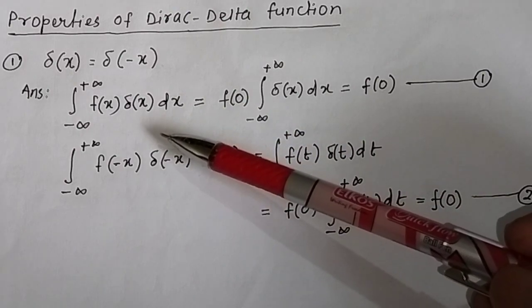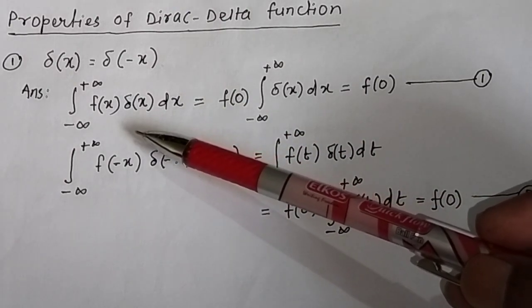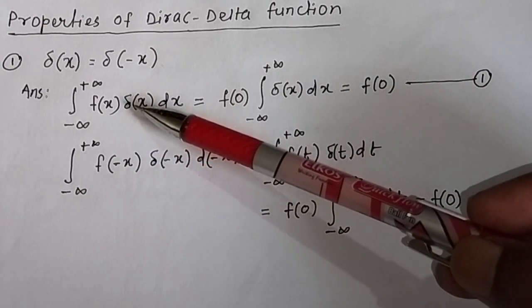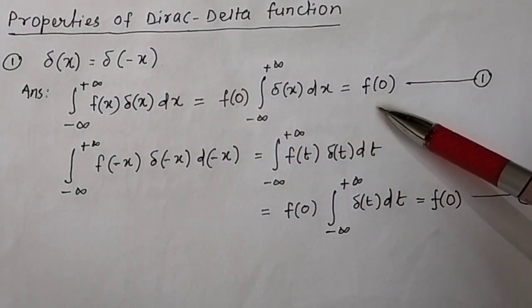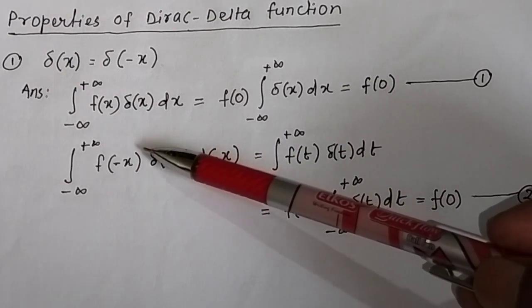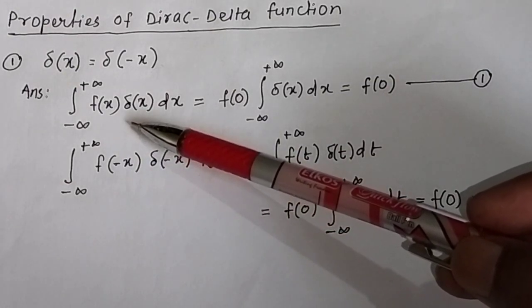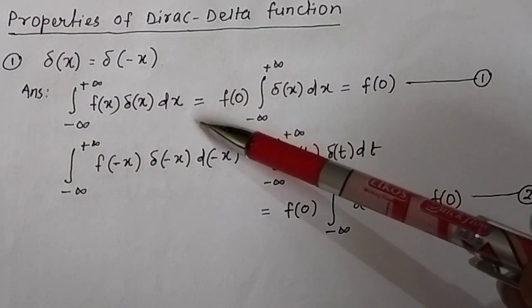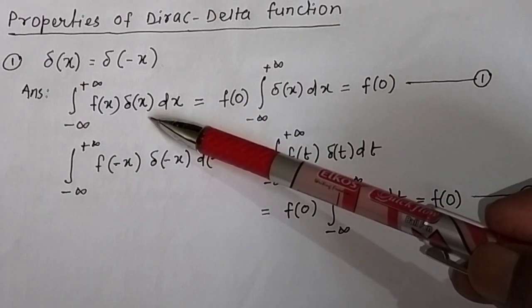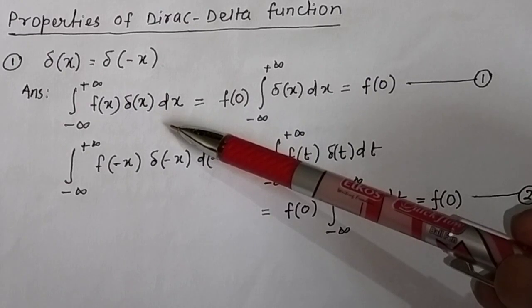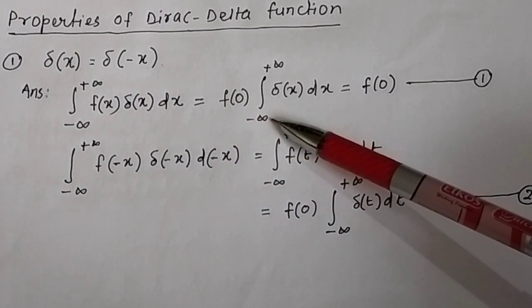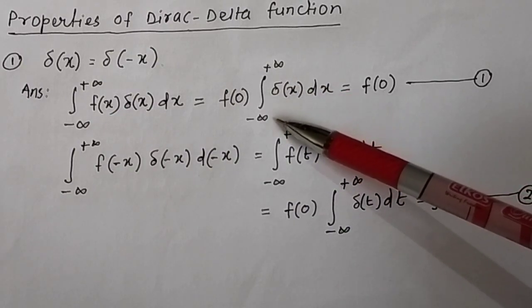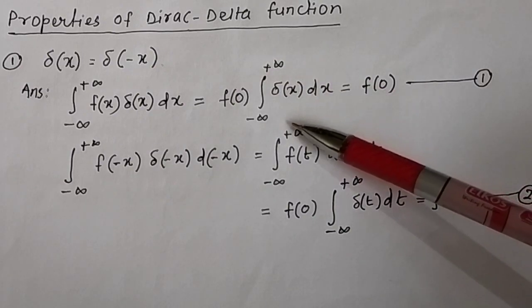As you know from the Dirac delta function, the integral of f(x) δ(x) dx from minus infinity to plus infinity equals f(0), where f(x) is an arbitrary function which is continuous and differentiable at x. At x = 0, δ(x) is equal to infinity, and the integral of δ(x) dx from minus infinity to plus infinity — the area under the delta function — is equal to 1.